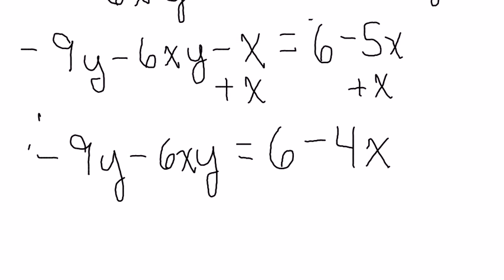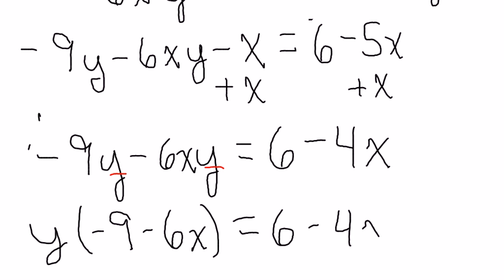The reason I did that is because now over here, I have two y's, but they're on the same side. So, what I'm going to do is factor a y out and rewrite that left-hand side as y times negative 9 minus 6x equals 6 minus 4x.